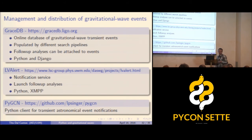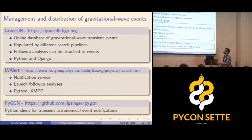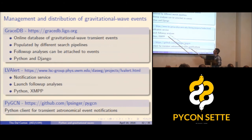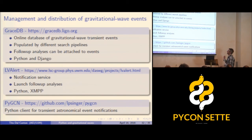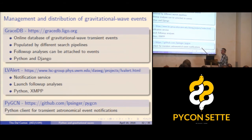Events are stored in a database called GraceDB — an online database of candidates written in Python and Django — where different pipelines can contribute events. There is also a Python notification service called LVAlert that notifies subscribers when events are uploaded, and this is connected to the GCN network which notifies about detections in other fields like gamma ray bursts as well.